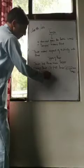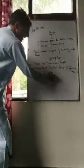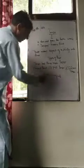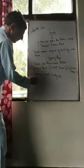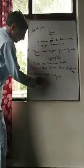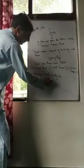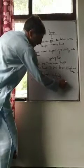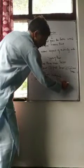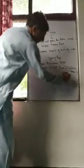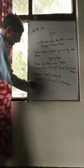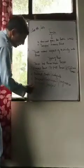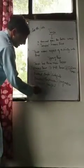Present tense can be categorized into four types. The first one is simple present, also called indefinite. The second one is present continuous, we can also call it progressive. Third one is present perfect. Fourth one is present perfect continuous.